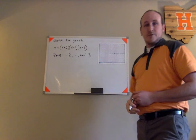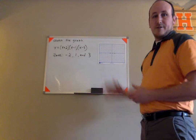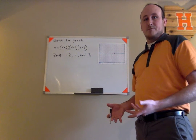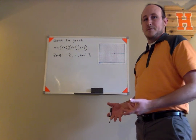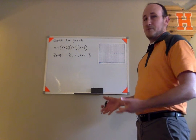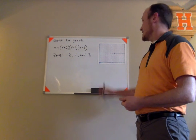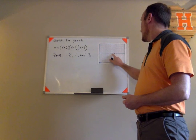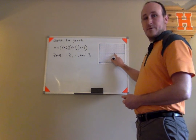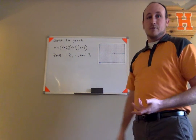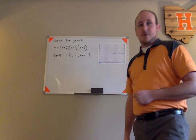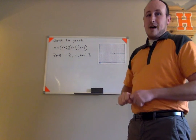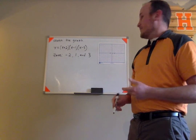I've marked those points on the graph. I know that's a little bit small, but if you understand what I'm doing here, you should be able to follow along. I've put a point on the x-axis at negative two, one, and three — those are the zeros of this function.